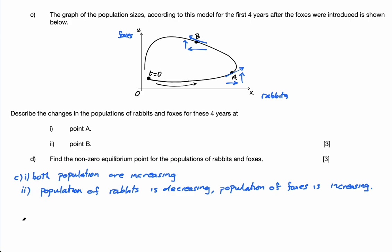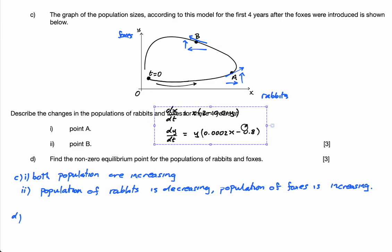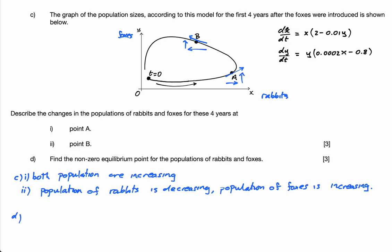Part D: find the non-zero equilibrium point for the population of rabbits and foxes. I have dx/dt and dy/dt — the rate of change of the rabbit and fox populations. The equilibrium point is when the rate of growth of both populations is equal to zero. So I need to find where dx/dt = 0 and dy/dt = 0.